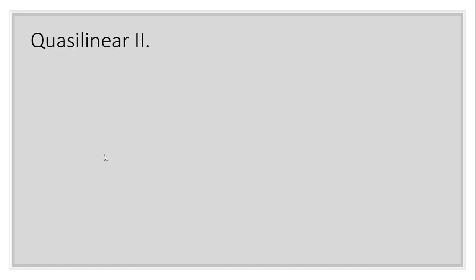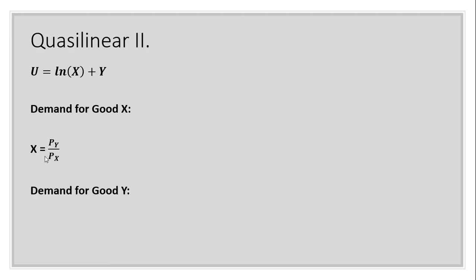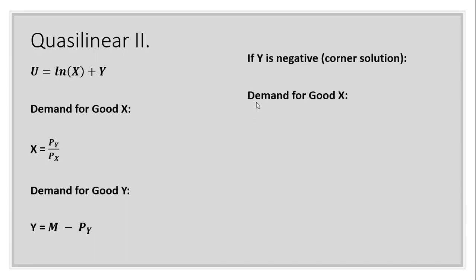Another quasi-linear utility function: utility equals the natural log of x plus y. The demand for good x will be the price of good y divided by the price of good x. And the demand for good y will be income minus the price of good y. Once again, if y is negative — meaning the price of good y exceeds income — the consumer will only buy units of good x. In that case, demand for good x is income divided by the price of good x, and demand for good y is zero.